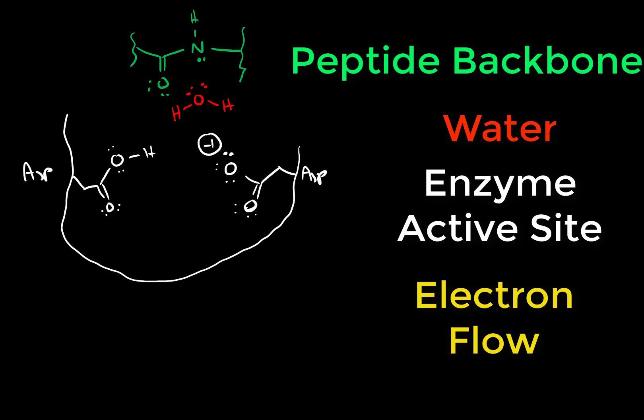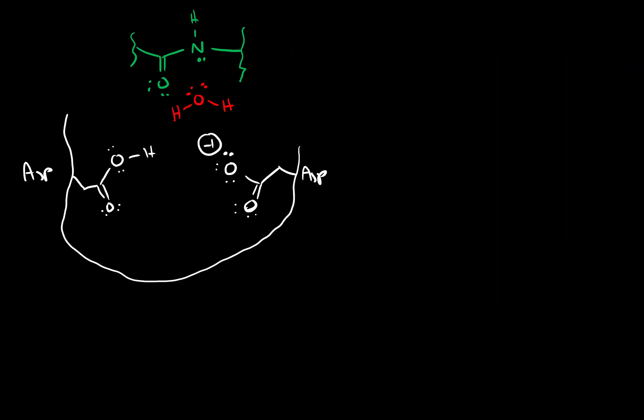In the first step in this reaction, what we need to do is convert water into a better nucleophile. The way the enzyme can do this is by deprotonating the water and creating a hydroxide anion. The enzyme can use this lone pair on the aspartic acid in the active site to reach out, pull off the proton from water, forming hydroxide.